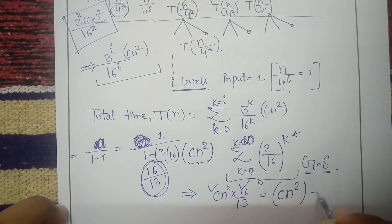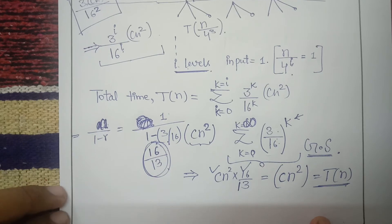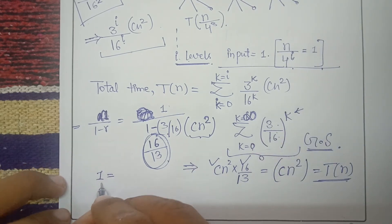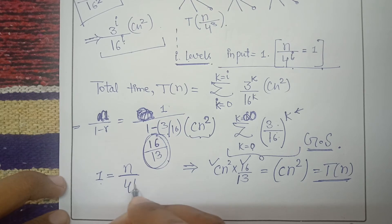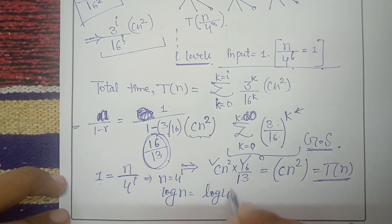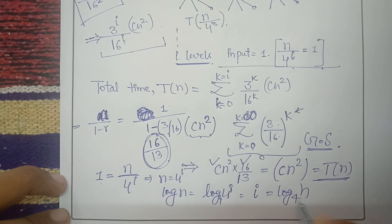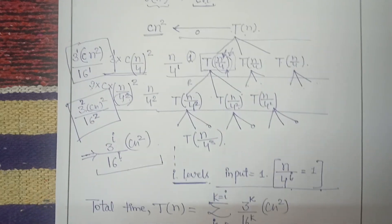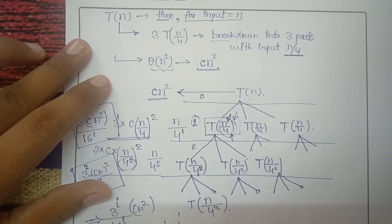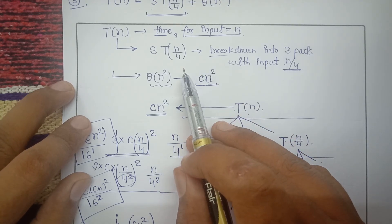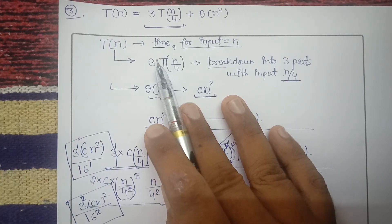We can also calculate the number of levels. Since n/4^i = 1, we get n = 4^i, and taking log base 4 on both sides gives i = log₄(n). So the number of levels is log₄(n), and the total time is Θ(n²). This was the recursion tree method. In the next video we will solve these problems using the Master's Theorem. I hope you understood the concept.